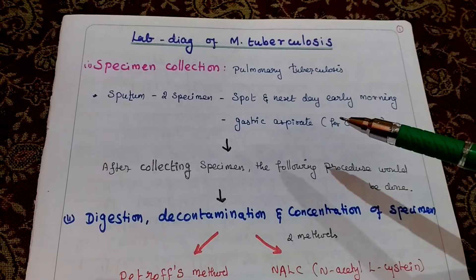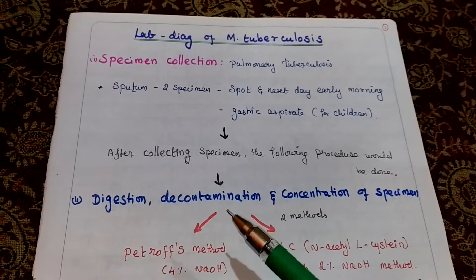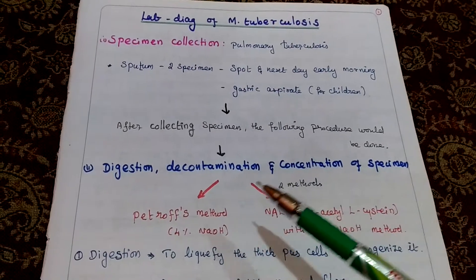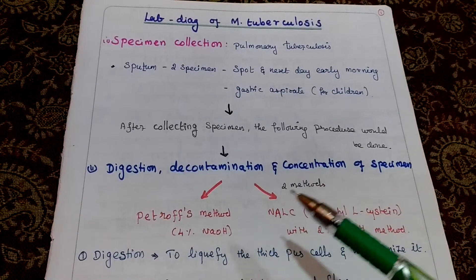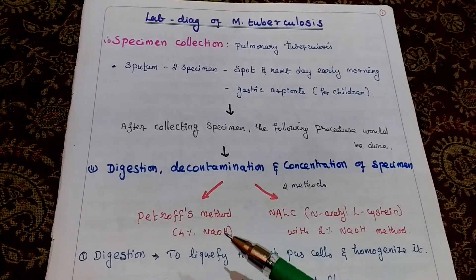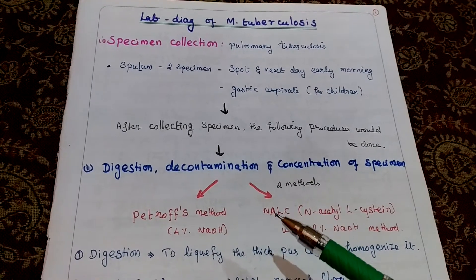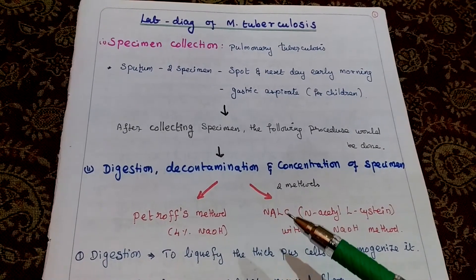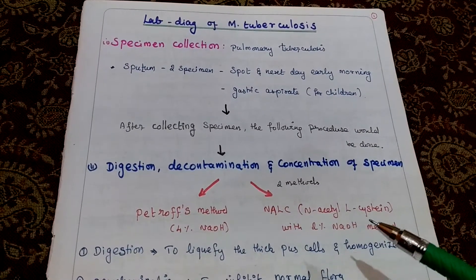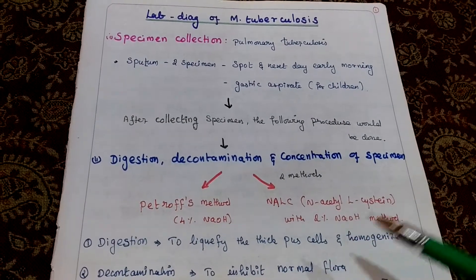After collection, we must follow digestion, decontamination, and concentration of the specimen. There are two methods: the Petroff method with 4% NaOH, and the second one is the NALC method — N-acetyl-L-cysteine method with 2% NaOH.